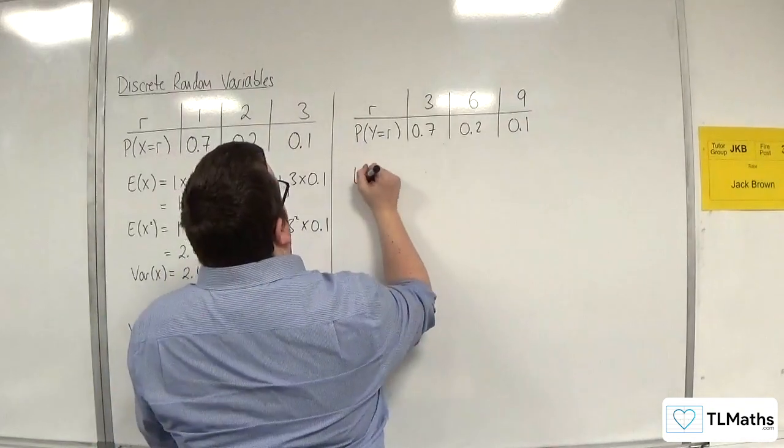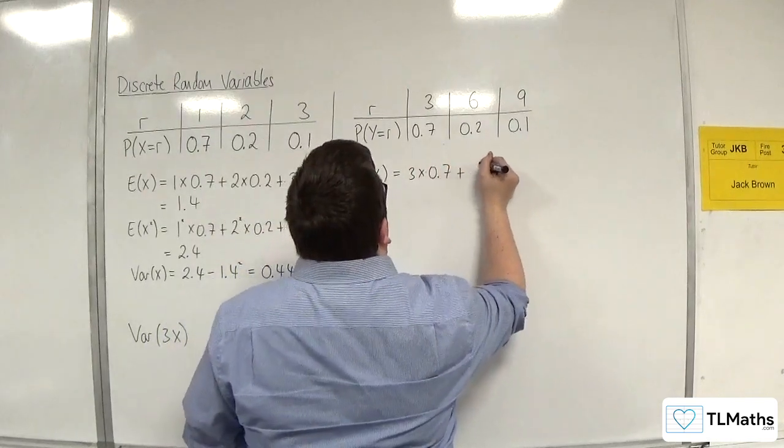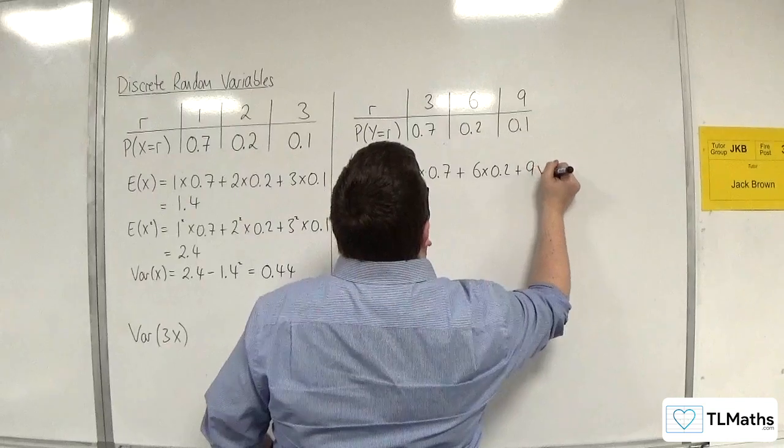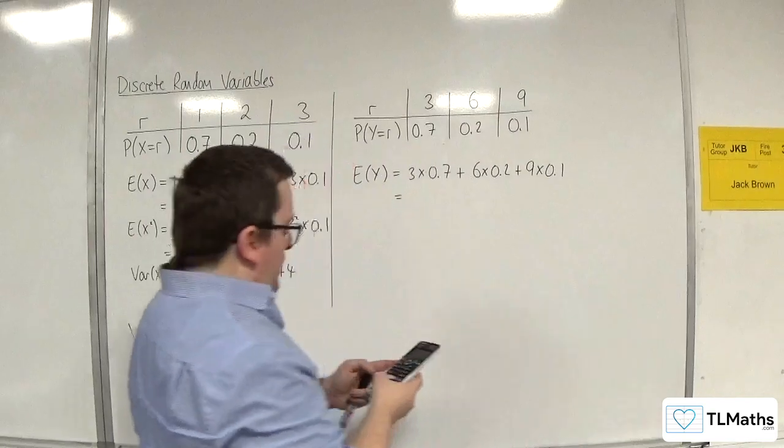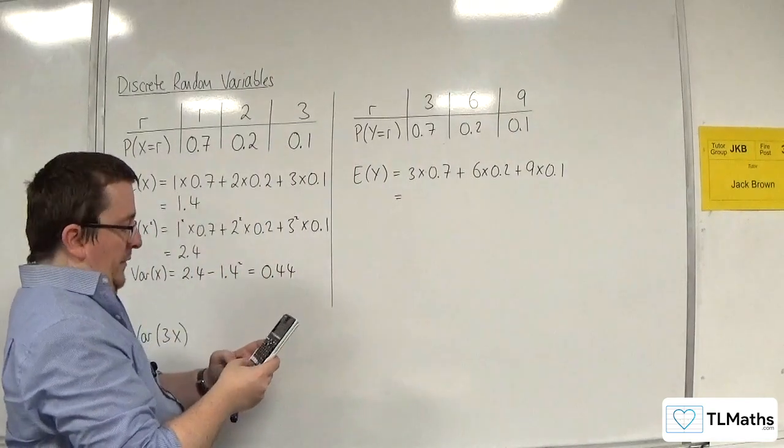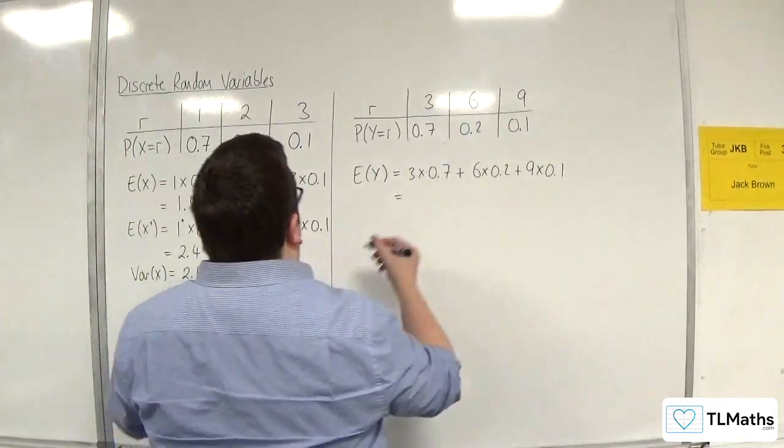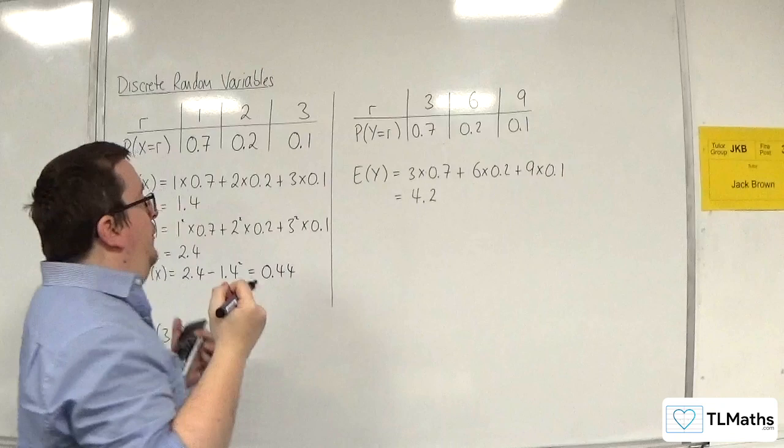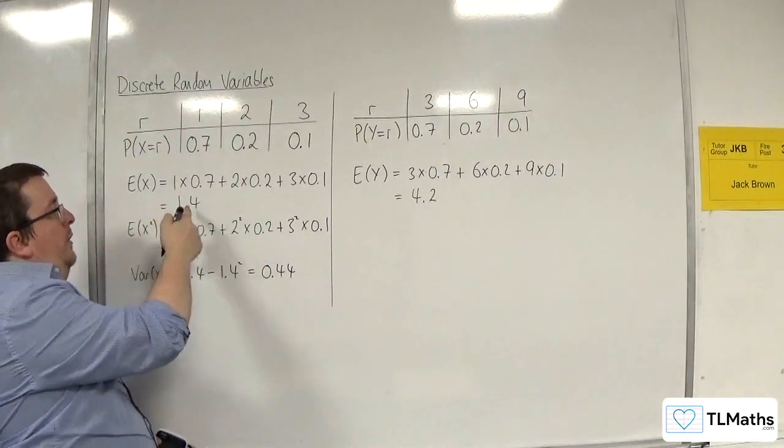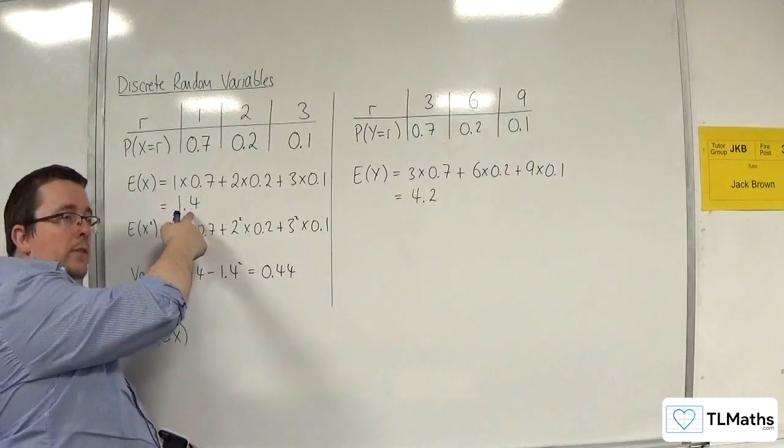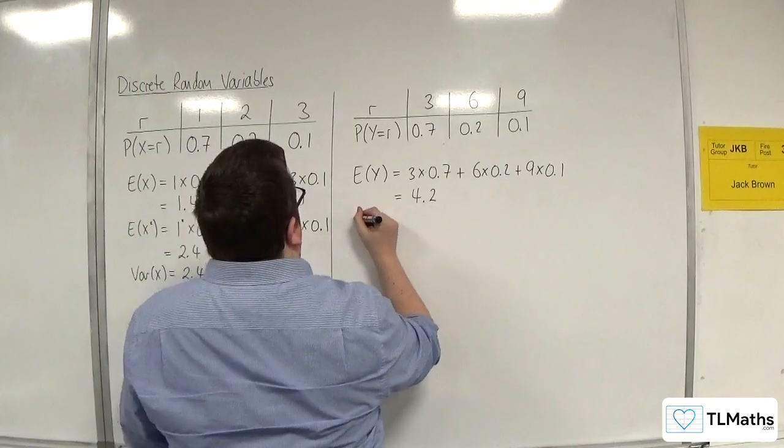So I'm going to need E of y. So 3 times 0.7, plus 6 times 0.2, plus 9 lots of 0.1, and we get 4.2. Now, unsurprisingly, E of 3x is 3 lots of E x. So 1.4 times 3 is 4.2. We shouldn't really be surprised by that.